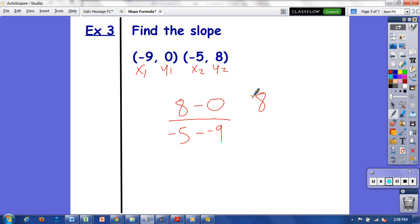8 minus 0 is 8, and negative 5 minus negative 9 is positive 4. So I have 8 over 4 which simplifies to 2 over 1 or 2.